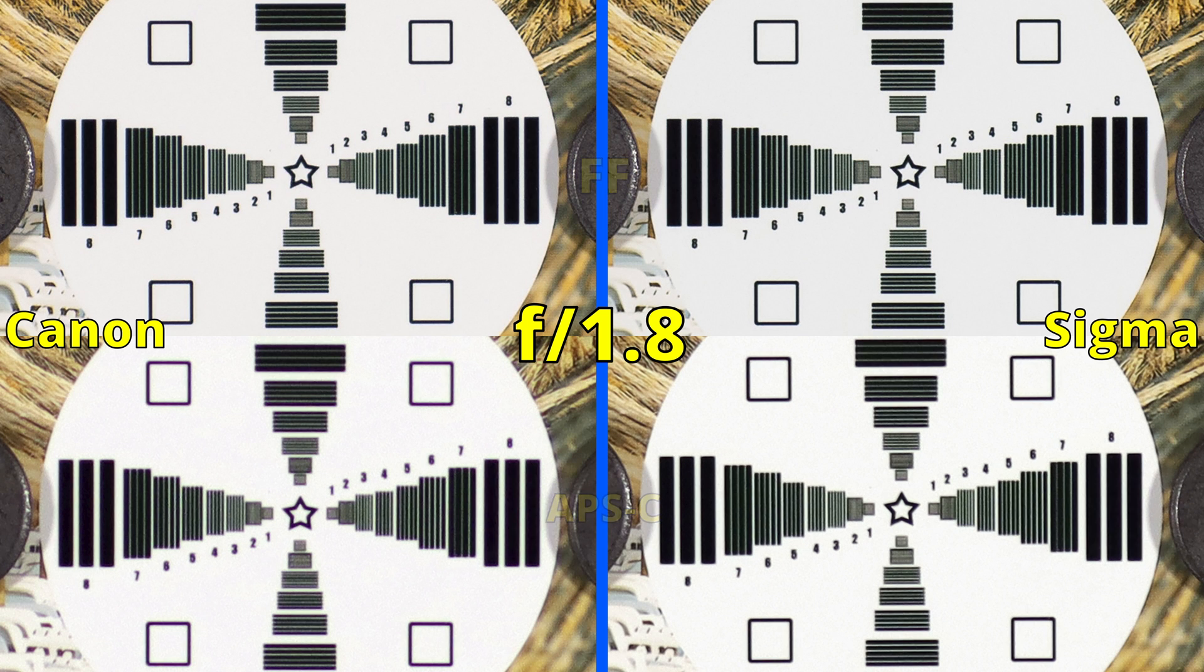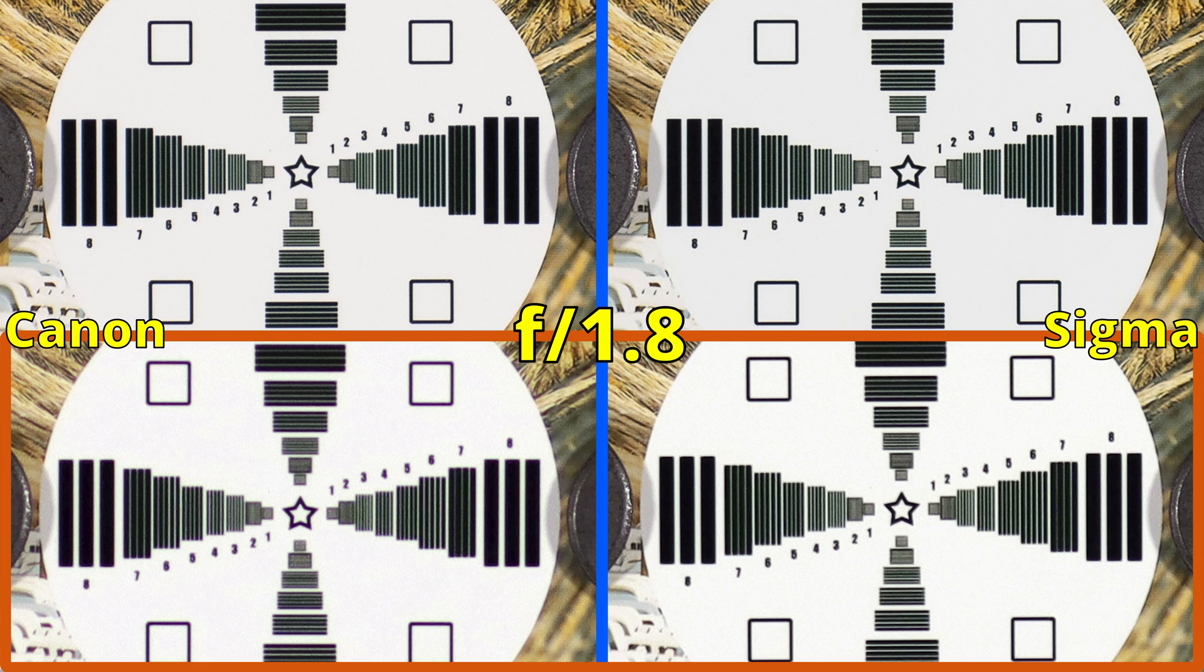Closing to f1.8 and on full frame, finally the Canon is as sharp as the Sigma. On APS-C, ghosting is still visible on the left side but the right side looks decent.